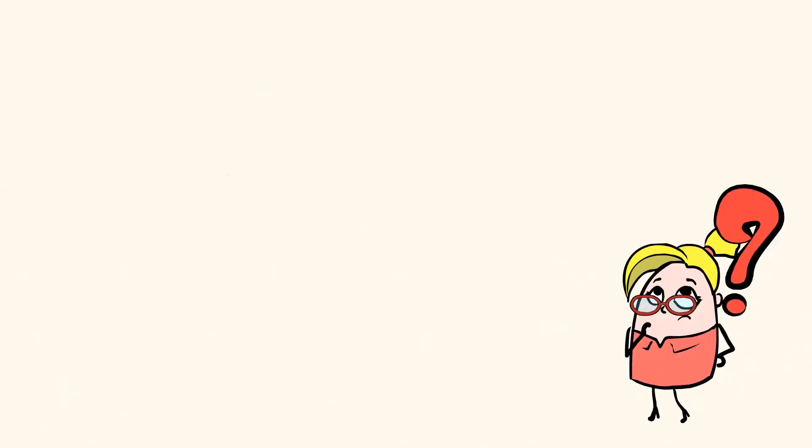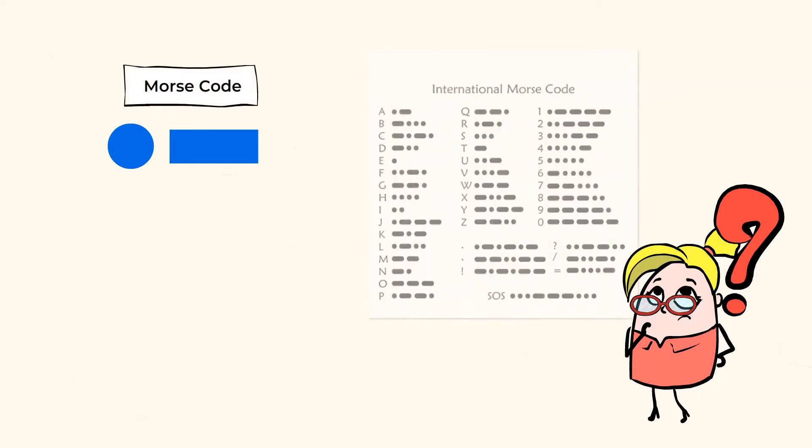Would you believe that there's a way to communicate with others using just dots and dashes? Seems like a very complicated code, right? Well, that's exactly what the Morse code is. The dashes and dots show the letters in the alphabet.